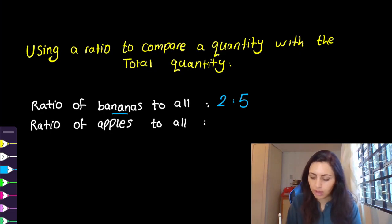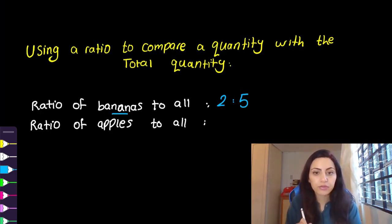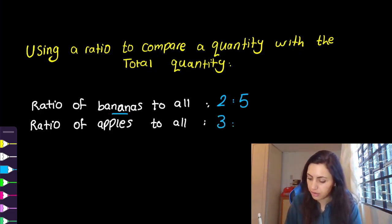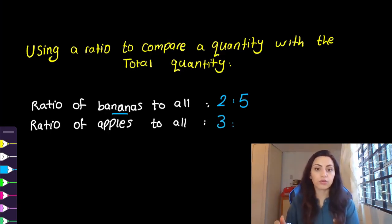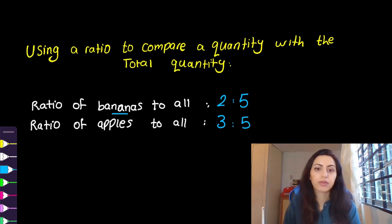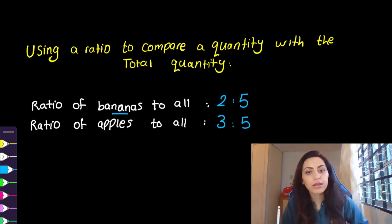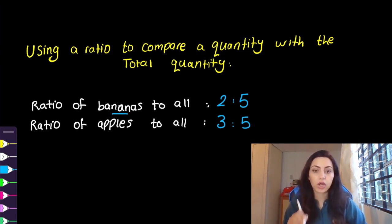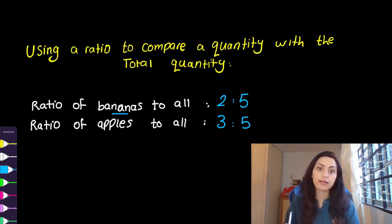Ratio of apples to all: we have three apples, and all the fruits total is five. So you really have to pay attention to the words and read the question carefully. As long as you do that, you're fine.